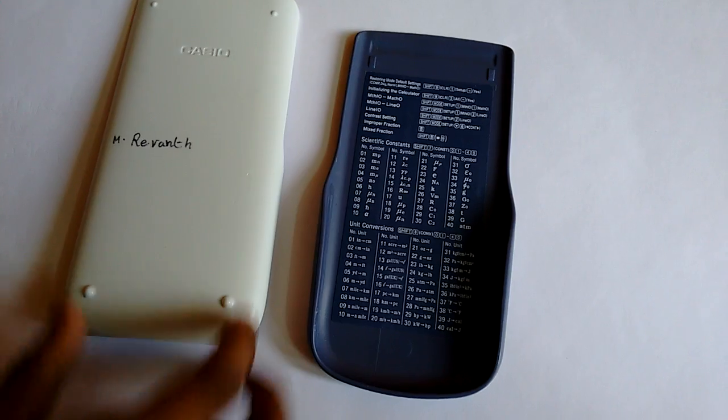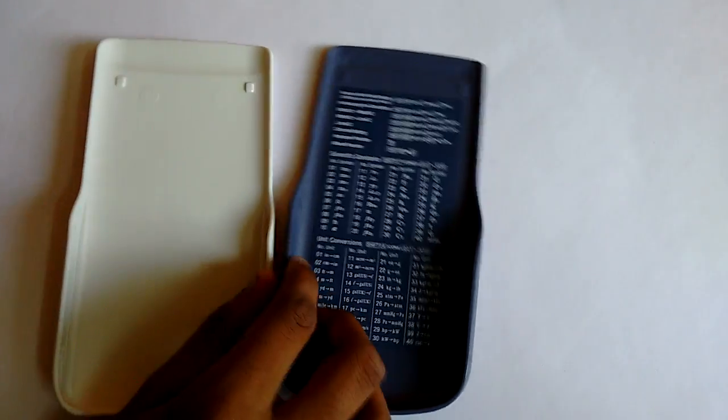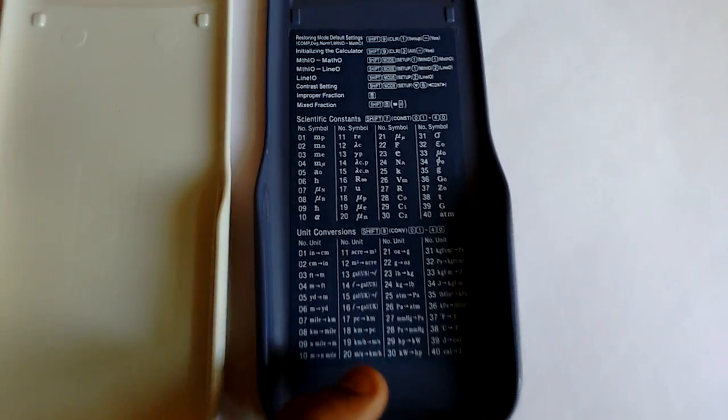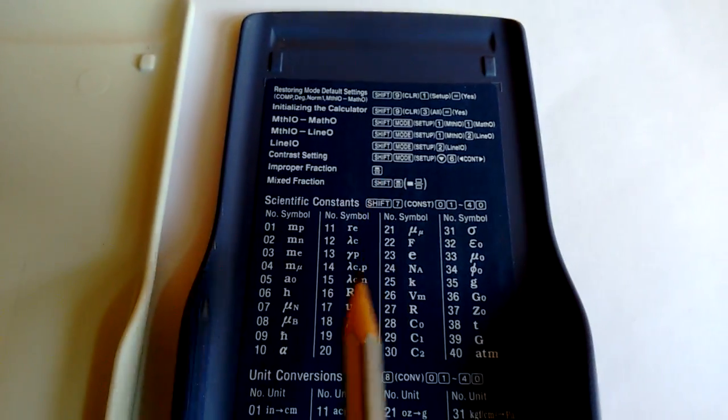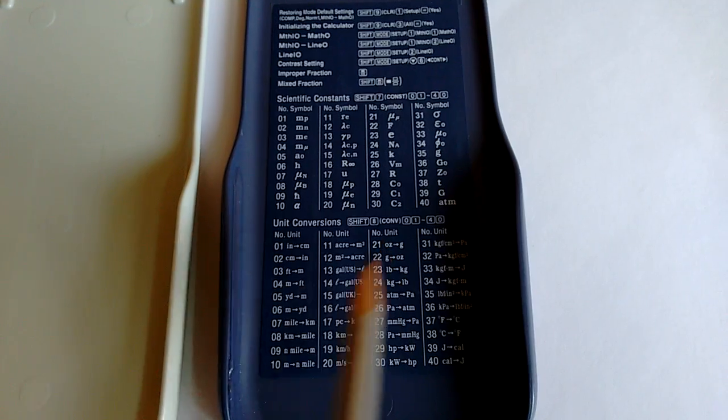The EX version has not that much detail and design. The advantage in the ES Plus version is that there is a sticker which has all the basic functions of the calculator, the scientific constants, and the unit conversions.